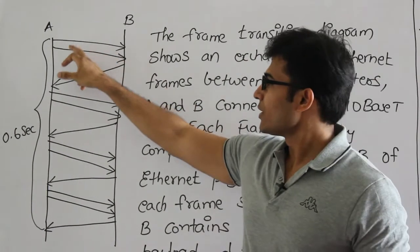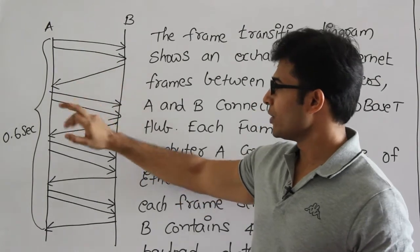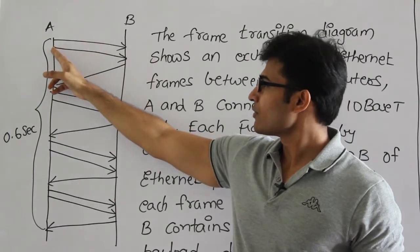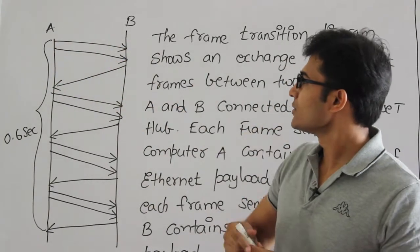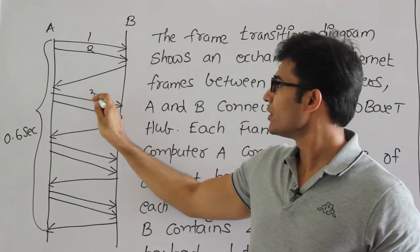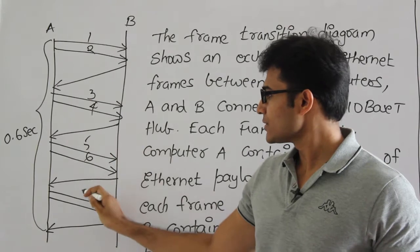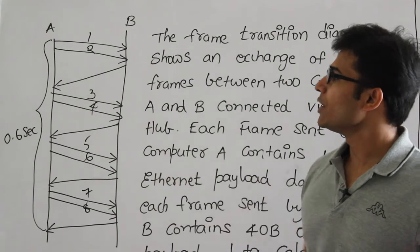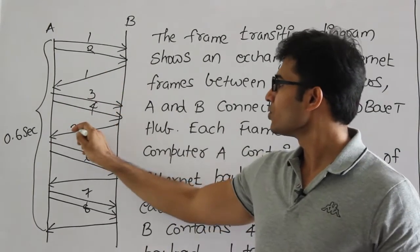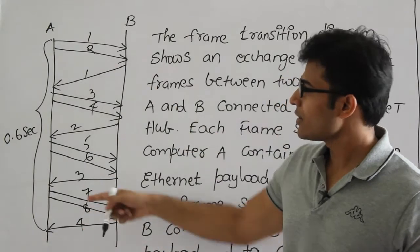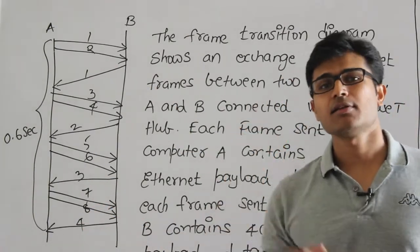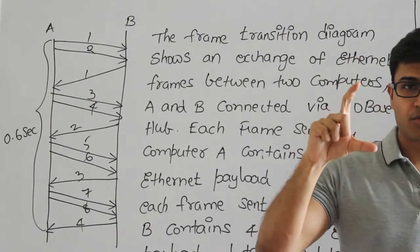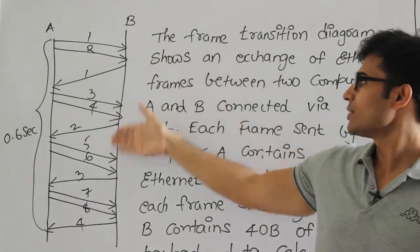Two frames are sent from A to B and one frame is sent from B to A, and this pattern repeats four times. So the total number of frames transferred from A to B is eight, and from B to A is four. This entire data transfer was captured within a time lapse of 0.6 seconds.